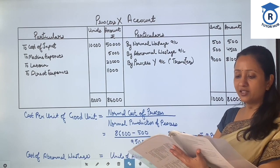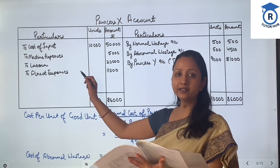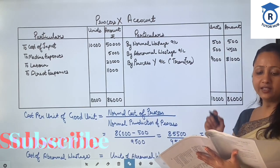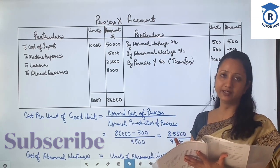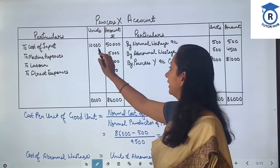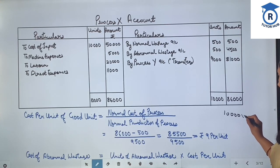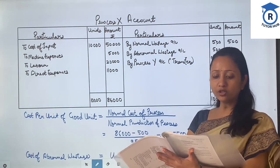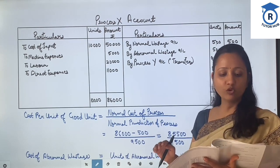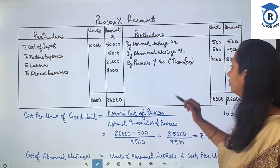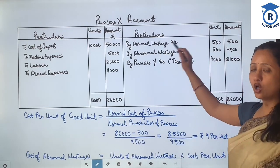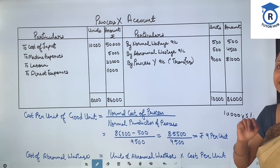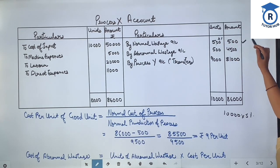Now, you have different expenses given — machine expenses, labor expenses, and direct expenses: 11,000. These have been written individually related to Process X. Now, normal wastage is given as 5%. So 5% of 10,000 is 500 units. Now it is given that scrap units sold from Process X fetch 1 rupee per unit. So the scrap is 500 units multiplied by 1, giving a scrap value of 500 rupees.